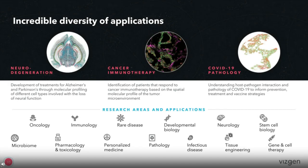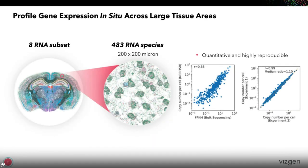As a gene expression profiling tool, MERSCOPE at its basic form reports the location and quantities of RNA species as well as the cell boundary information. With so much information, it opens up many application areas. For example, you can use this to profile gene expression in situ, classify and discover cell types and states, and reveal the cellular structure and organization within native tissue context. Shown here is using a panel of 500 genes to profile the mouse GPCR and RTK receptors in the mouse brain — a highly quantitative and reproducible measurement, showing 8 RNA subsets out of 483 measurements.